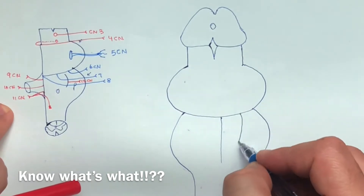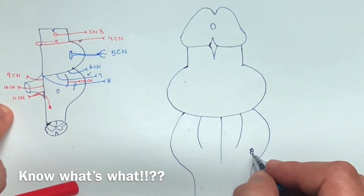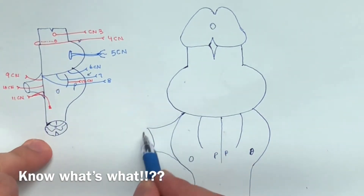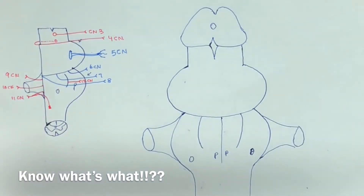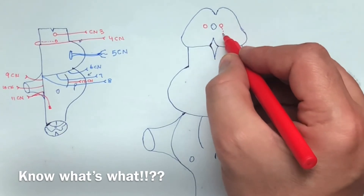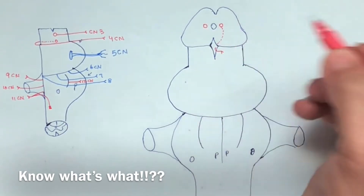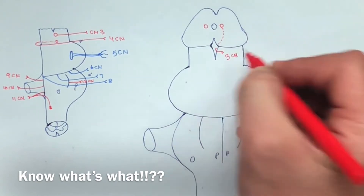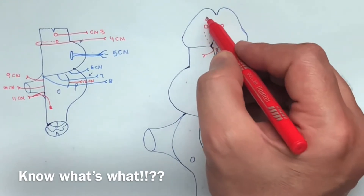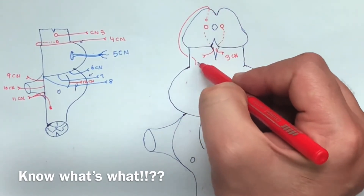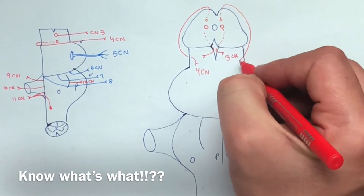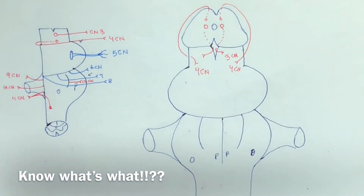Here are the pyramids and the olive, and here is the inferior peduncle. The third cranial nerve exits from the interpeduncular fossa. The fourth cranial nerve goes back and exits, coming all the way back around to the front — this is how the fourth cranial nerve comes out.